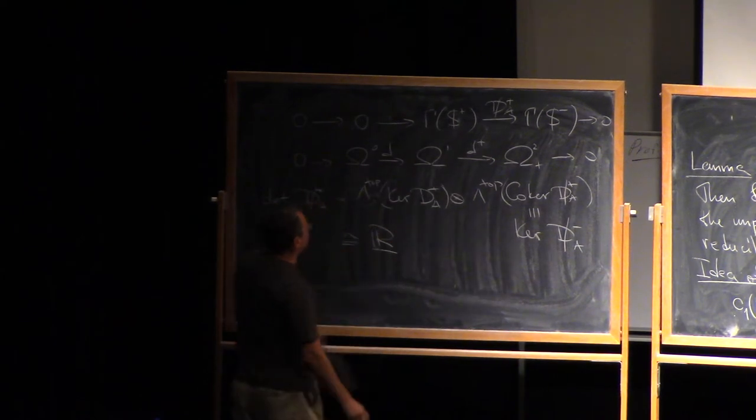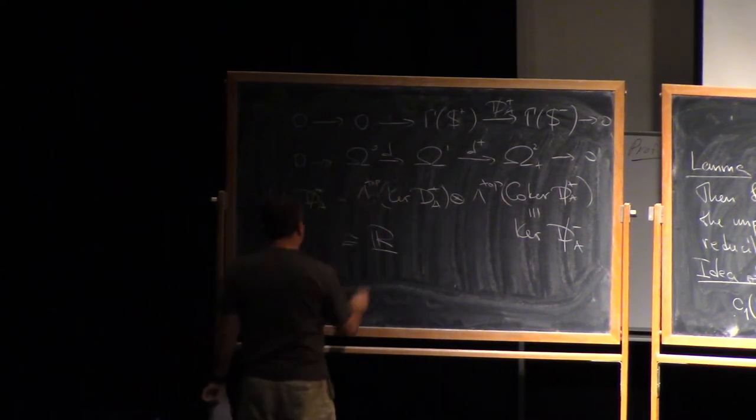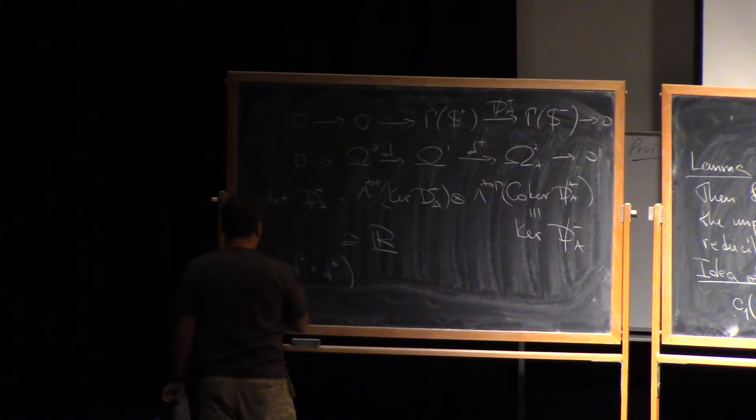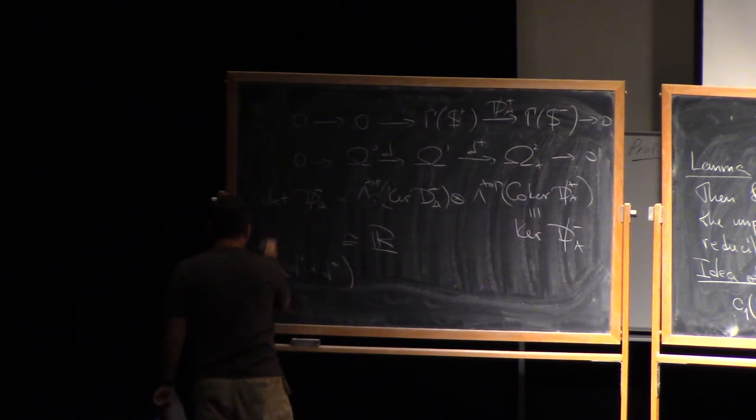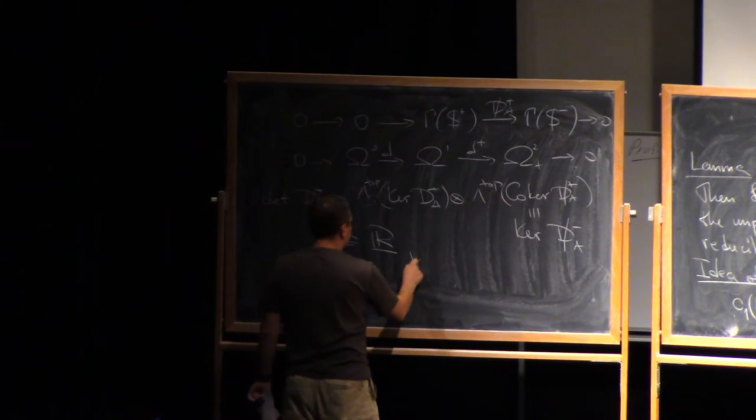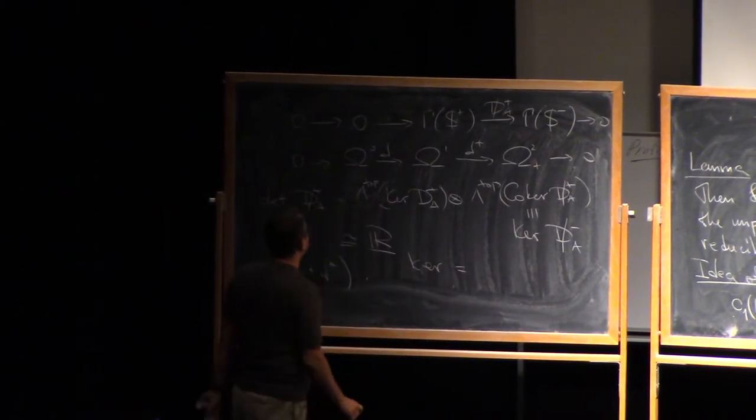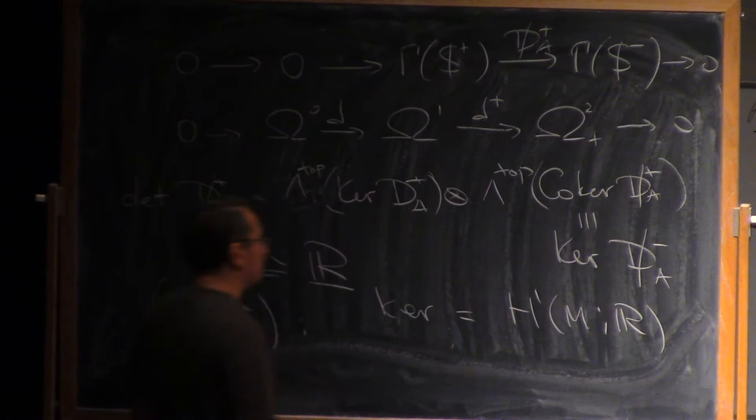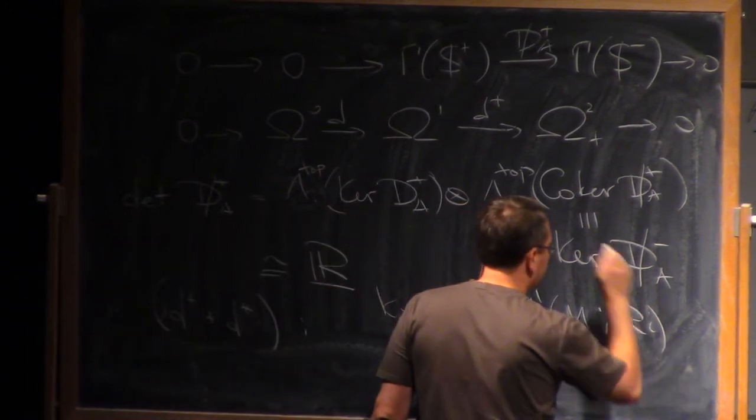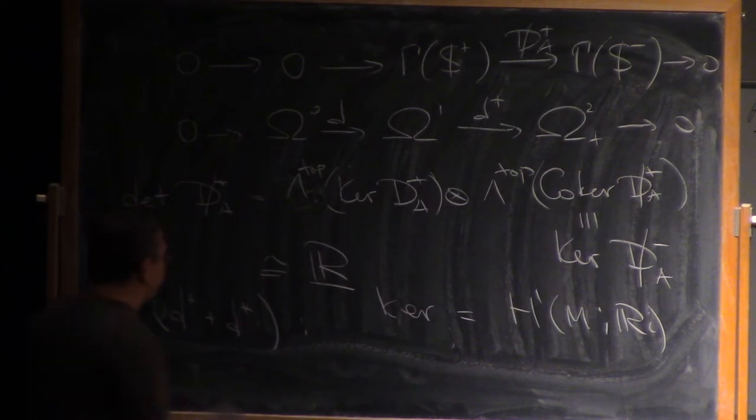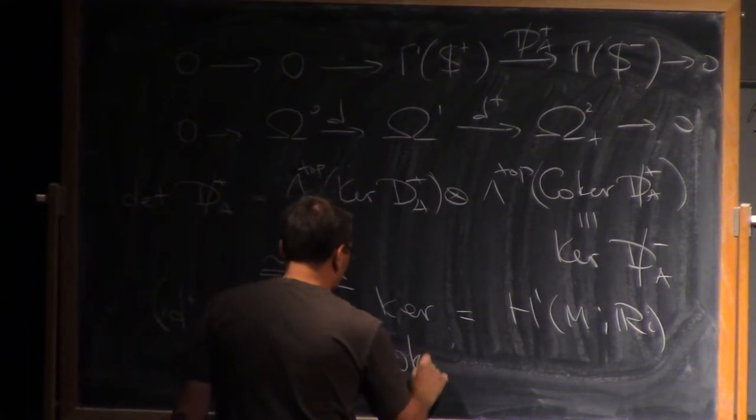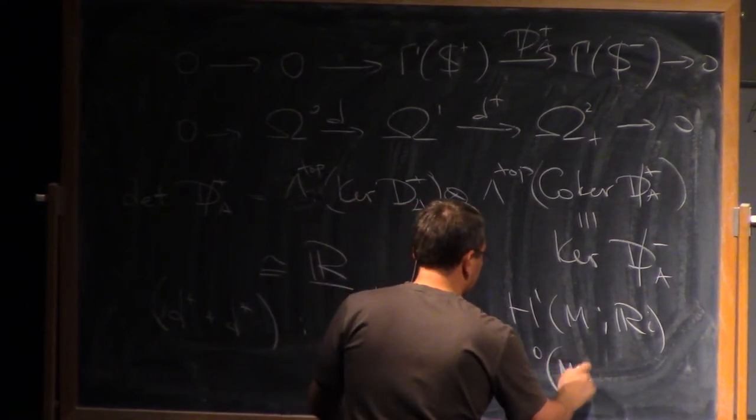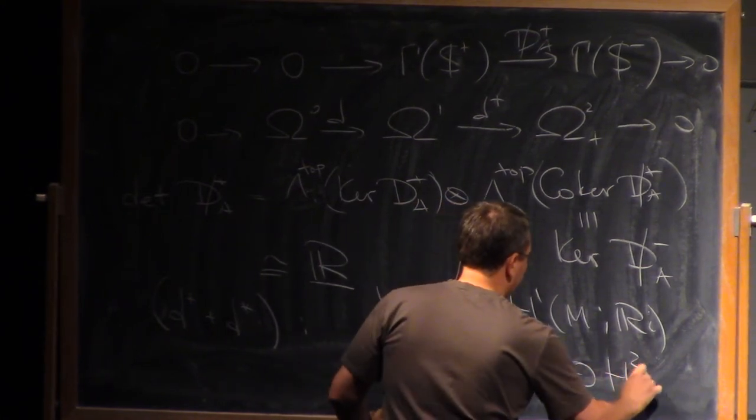Now, it's also easy to handle this complex. So the corresponding operator here is d plus plus d star, and if you want to consider the determinant, so we have the kernel of this is just H1MR. Well, we have is always purely imaginary, and the core kernel is also easy to compute. This is just H0. Let me just write H0 plus H2 plus.